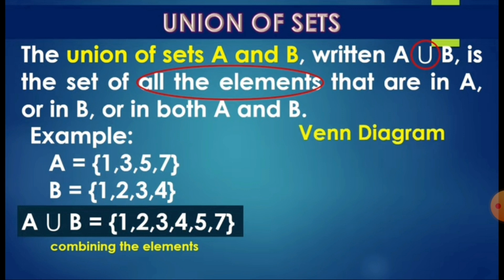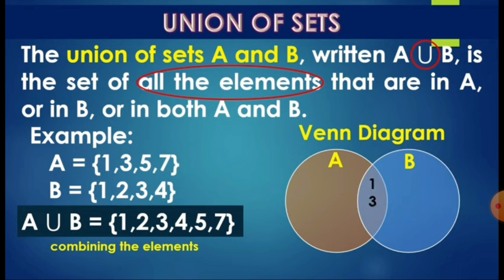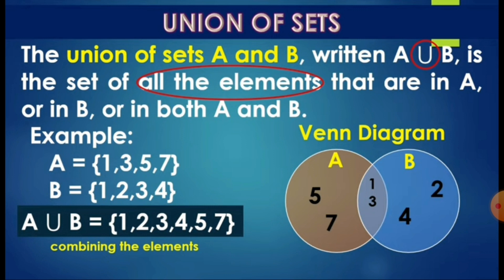Let's present this using the Venn diagram. Since they have common elements 1 and 3, the circles should still intersect. Write 1 and 3 in the middle. Then write the elements of A not in B: 5 and 7. And the elements of B not in A: 2 and 4. If asked to get the intersection, the answer is only 1 and 3. But for the union, include all elements: 1, 2, 3, 4, 5, and 7.